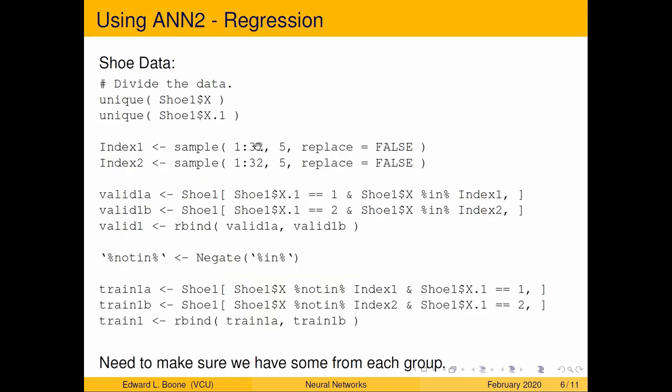And the fourth column is the machine number because there were two machines that were used on this. All right so the first thing we're going to do is split up the data. So hopefully you've read in the data. We're going to break this apart. And this should work with the data the way it is if you just read it in. I didn't do any special formatting in R. So first thing I'm going to do is pull out the unique shoes and then pull out the unique machines.